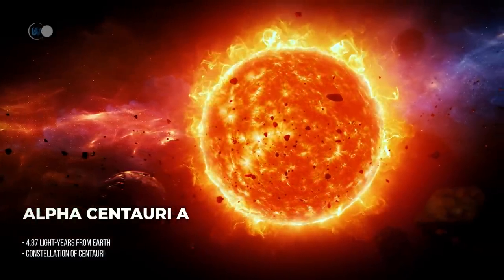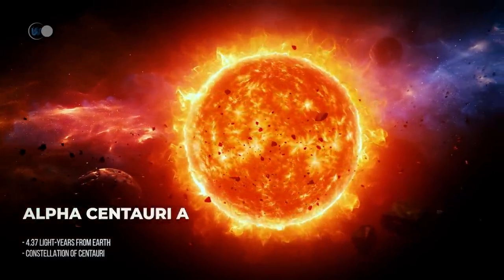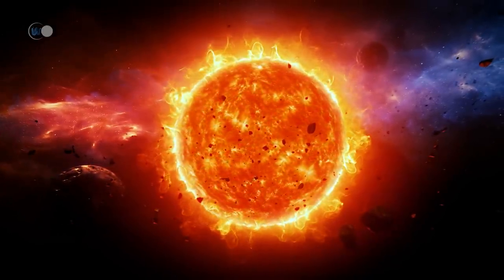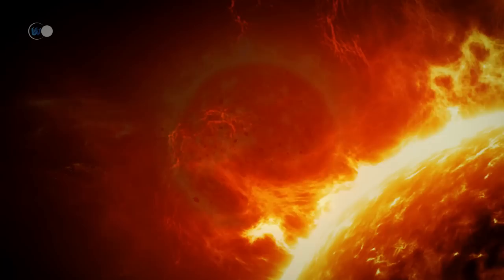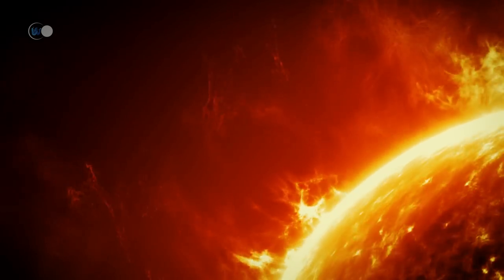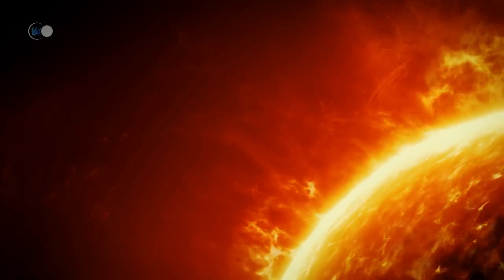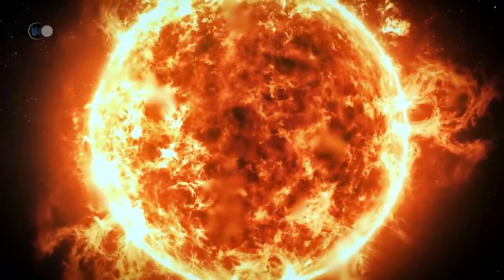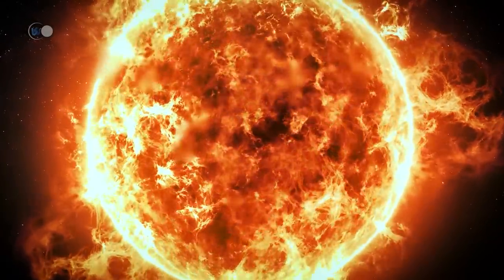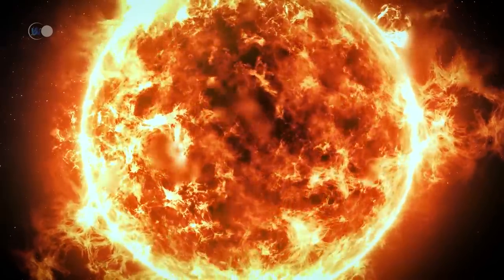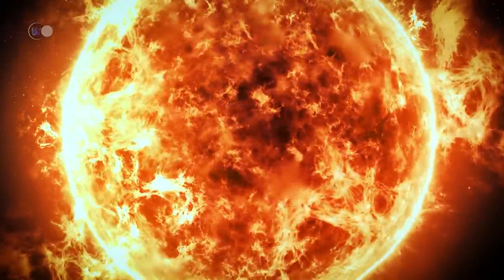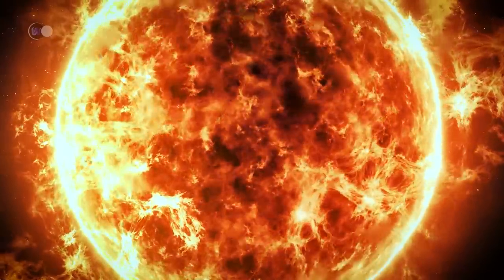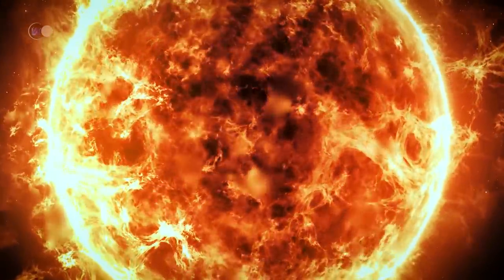Alpha Centauri A, also named Rigel Cantares, is the largest of the stellar duo, with a mass equivalent to 1.1 solar masses, and a luminosity 1.519 times that of the Sun. It is a yellow dwarf that is 10% more massive than the Sun, with a radius 22% larger. In short, you are looking at the twin sister of our Sun.